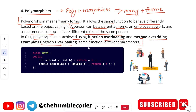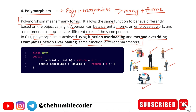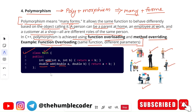An example of function overloading is the same function name with different parameters. We have a math class with an 'add' function taking integers a and b and returning a+b. There is another 'add' function where the type of variables and return type are different. Although the function name is the same, it has different forms — that is why this is an example of polymorphism.